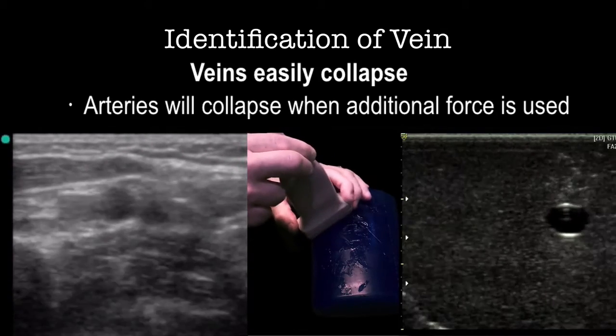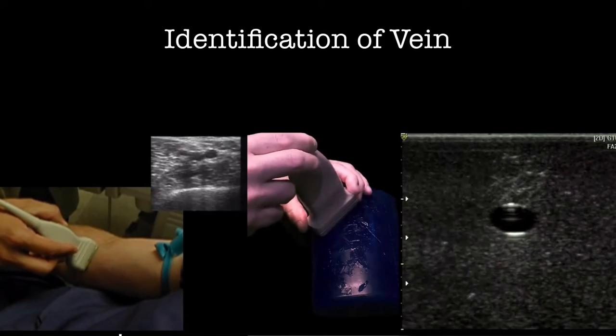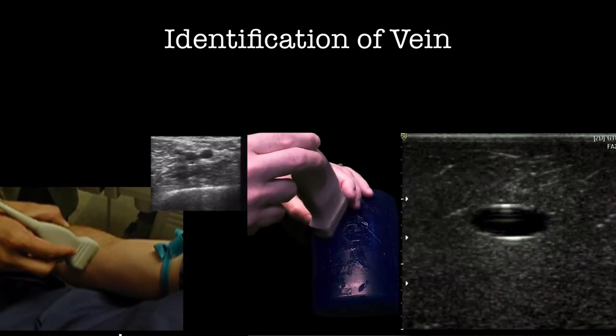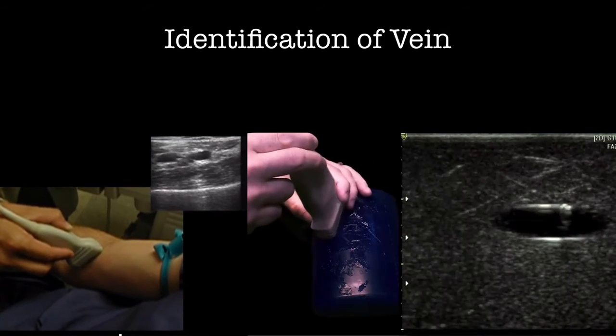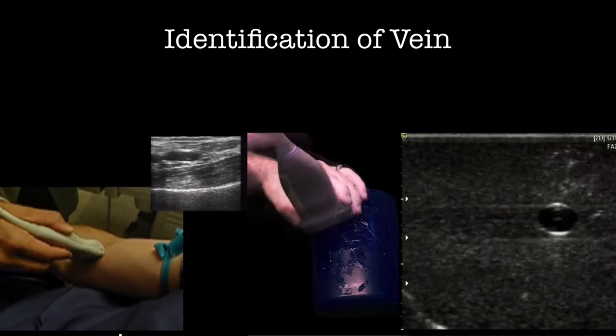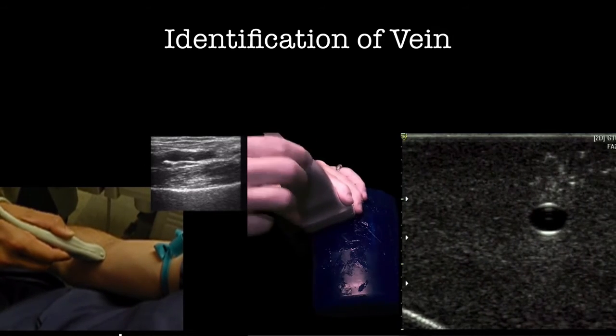Veins are not identified in long axis. Veins are identified in short axis and then the transducer is turned from short axis to long axis while visualizing the vein on the screen the entire time.